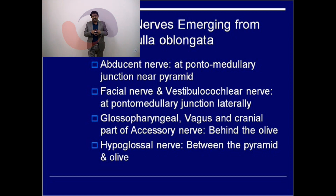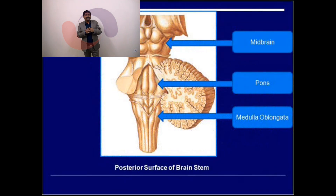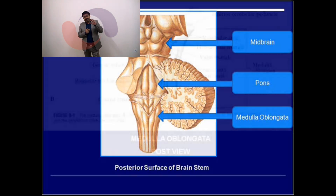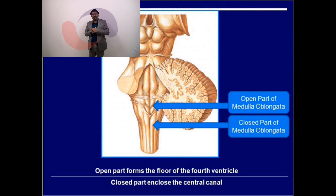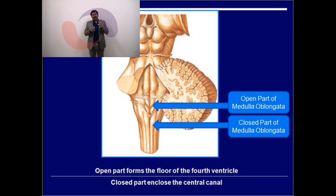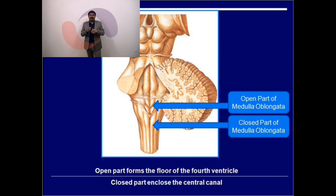In clinical practice it is important to know which cranial nerves originate from different parts of the brainstem. Now moving to the posterior surface: it is divided into an open part and a closed part. The open part opens into the floor of the fourth ventricle, while the closed part encloses the central canal, similar to the spinal cord.